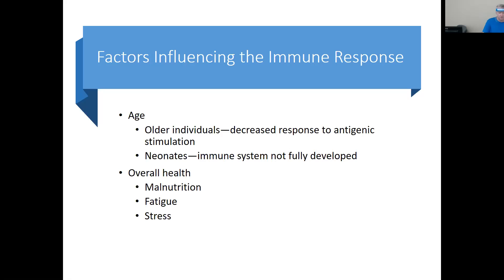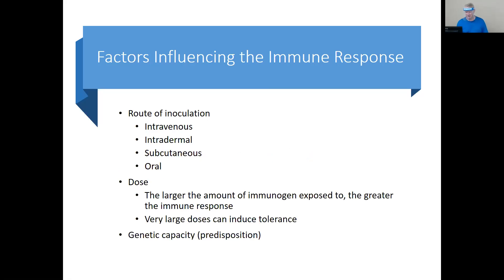Most people will say that as they're getting older or having a very stressful time, their immune system gives them a surprise — shingles. So we know that plays a part in how we deal with some of our antigens. Factors influencing your immune response include route of exposure: intravenous administration gets an antigen directly into the circulatory system.